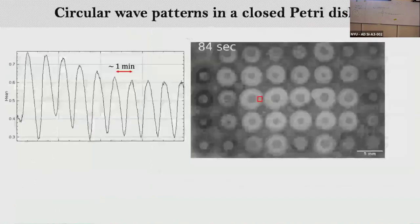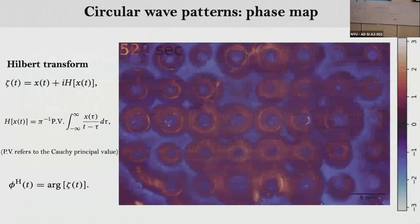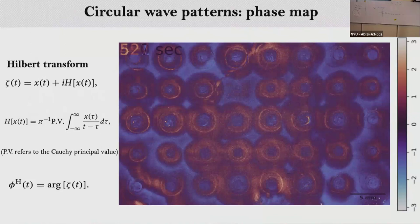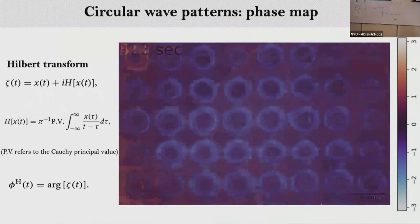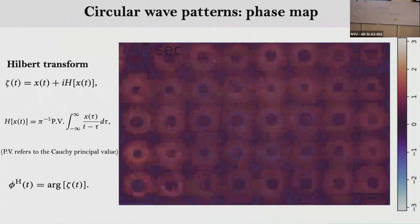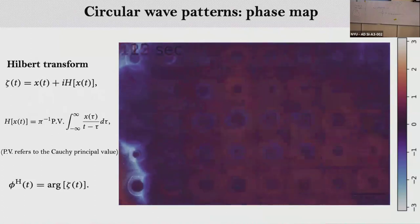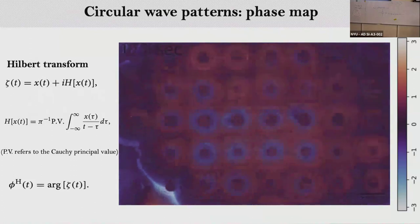Measuring light intensity oscillations near one obstacle gives a period of around one minute. To quantify synchrony between waves from different obstacles, we perform a Hilbert transform. The signal I(x,t) gives a phase between minus pi and pi. At least at the beginning, waves start in synchrony and propagate outward.